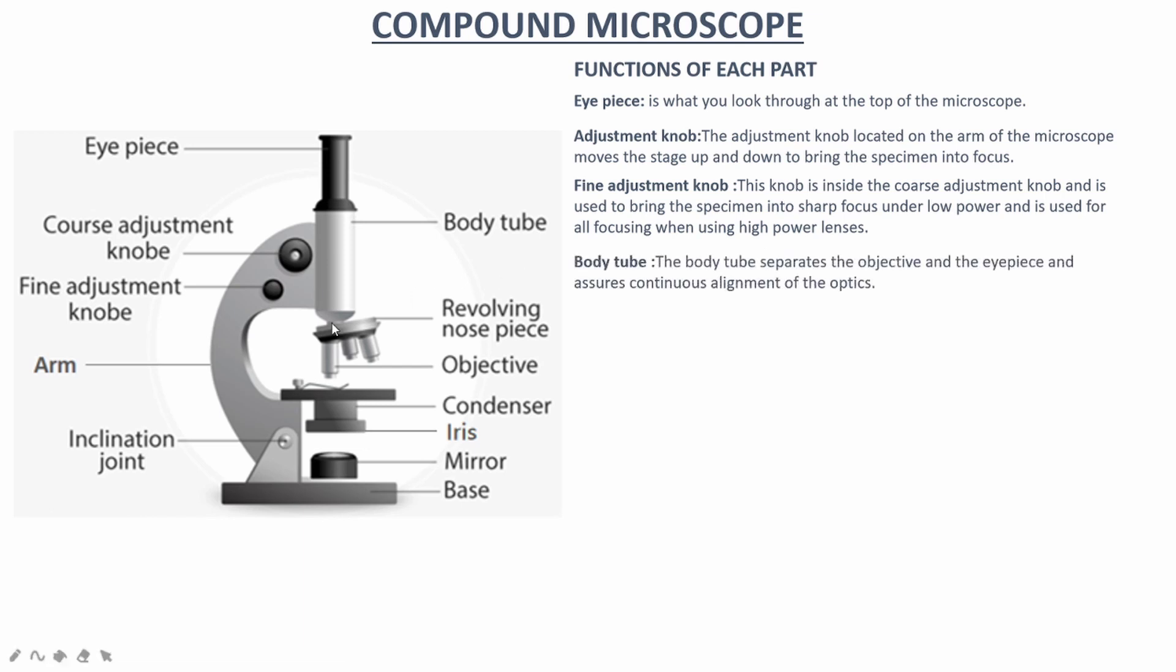The body tube separates the objective and the eyepiece and assures continuous alignment of the optics.